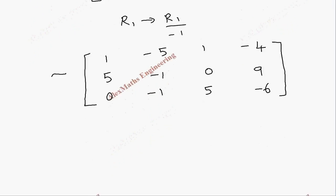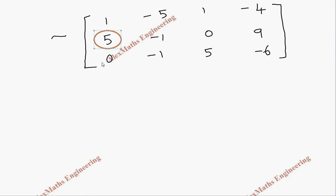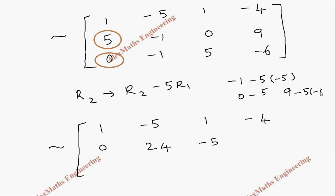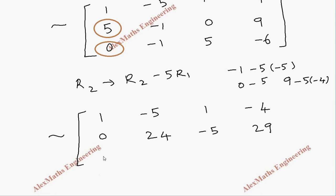Using that leading 1, we are going to make zeros below it. The third row already has 0 in the first column. For row 2 we apply R2 = R2 - 5×R1, giving [0, -1+25, 0-5 | 9-5×(-4)] = [0, 24, -5 | 29]. Row 3 remains [0, 0, -1, 5 | -6].